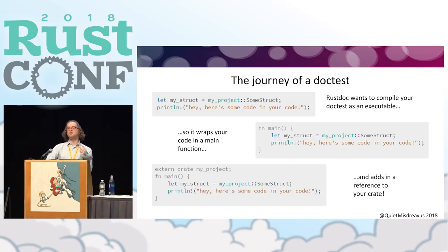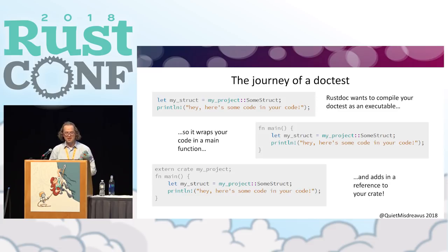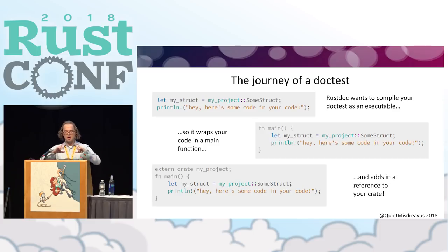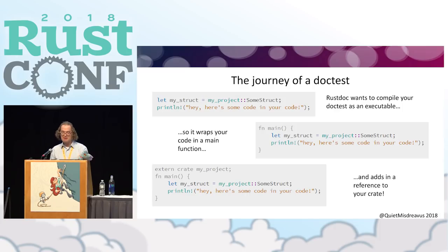It's worth digging into what RustDoc does when it has your doc test. In the sample, I had a two-line thing that just instantiated an empty struct and had a `println!`. What RustDoc wants to do is take that code snippet and turn it into an executable file that it can build and run. To that end, it wraps it in a main function if there's not one already, and then adds a reference to your crate if it's not there already.